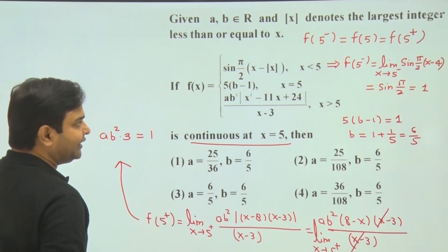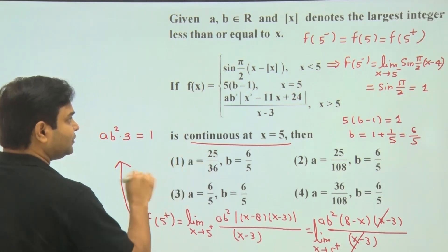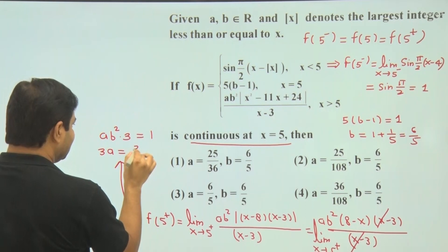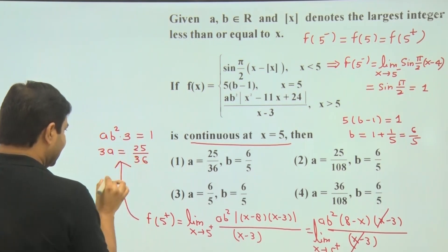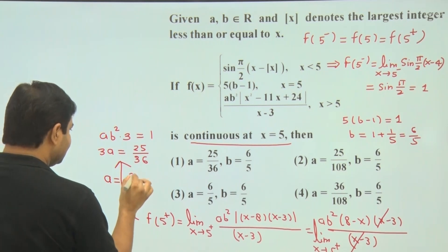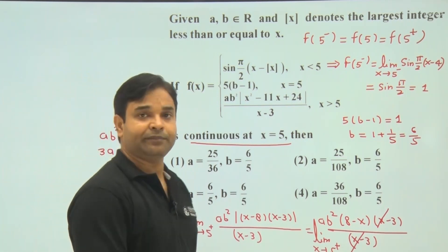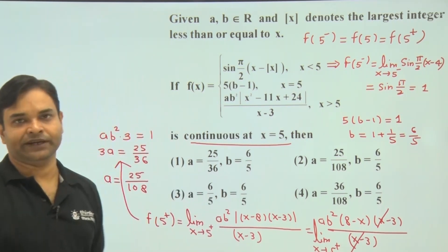b we have already calculated, so b is 6/5. So 3a times 6/5, this will be 25 divided by 36, and a will be 25 divided by 108. So a is 25/108 and b is 6/5.